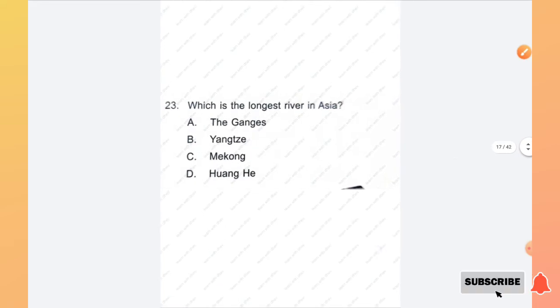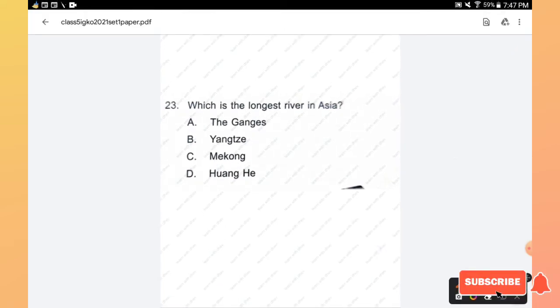Question number 23: Which is the longest river in Asia? The Ganges, Yangtze, Mekong, and Huang He. The right answer is the longest river in Asia is the Yangtze.